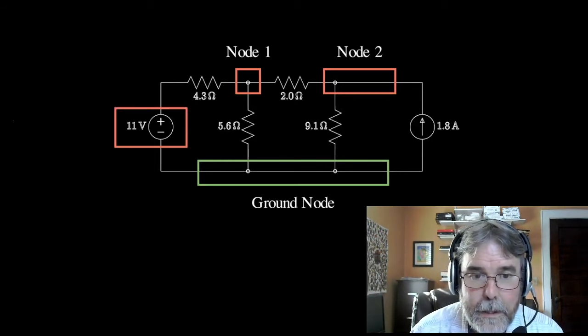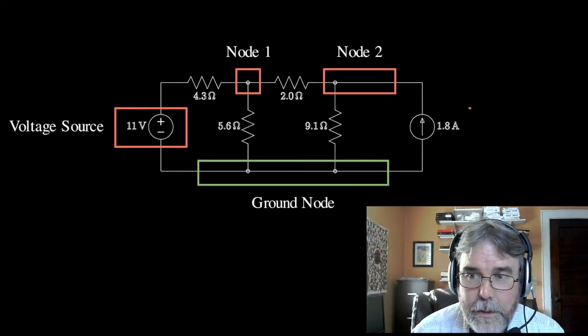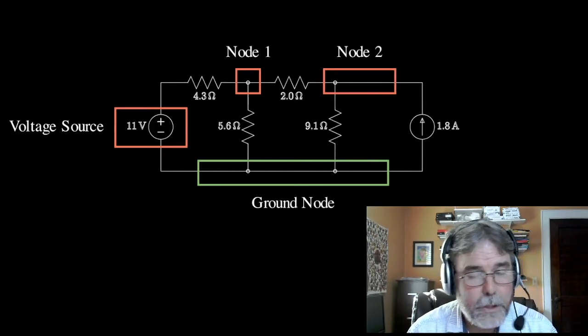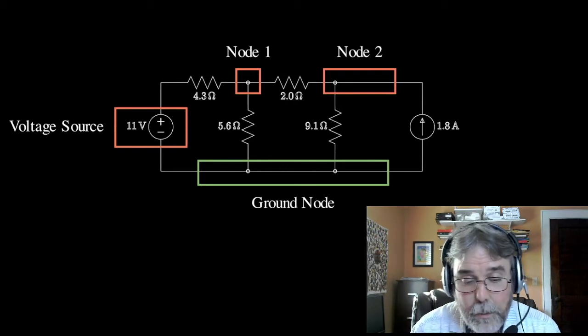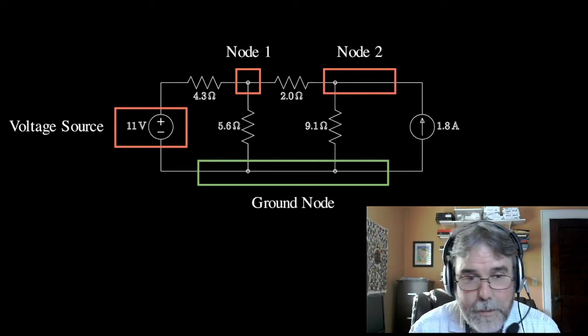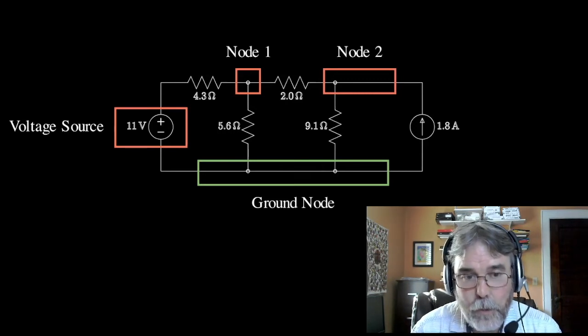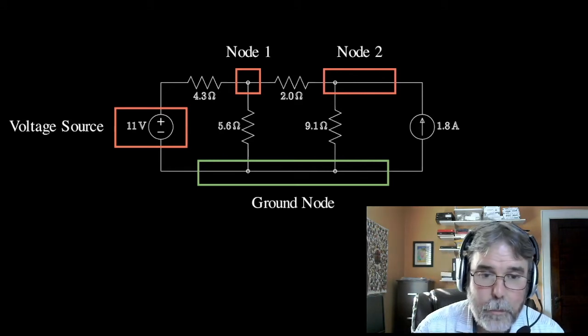So the first thing, other than resistances, is this guy. It's a voltage source. A voltage source is simply an object in your circuit that has a very definite voltage. So a good example from life is you go to the hardware store, you buy a battery. You buy a battery based on its voltage. It could be a 6 volt battery or a 9 volt battery or a 1.5 volt battery.